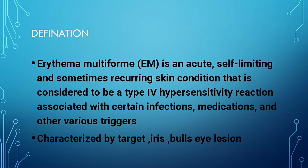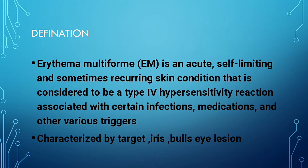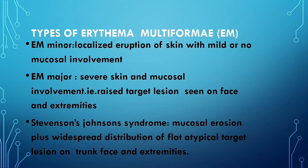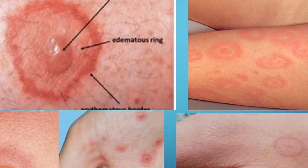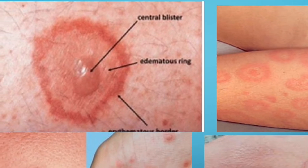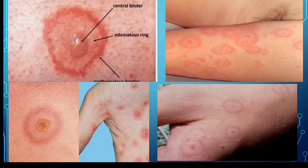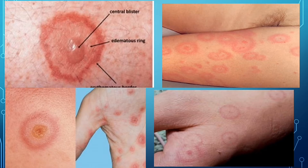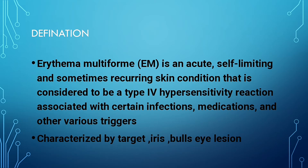Erythema multiforme is characterized by target, iris, or bullseye lesions. Target lesion means the skin lesion has three zones of color: in the middle there is a blister, or crust after the blister ruptures, surrounded by pale pink, and there may be swelling. It is also called iris lesion as it resembles the iris of an eye.